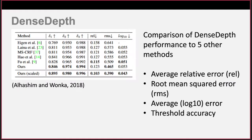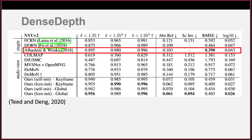DenseDepth is compared against other solutions that produce depth maps. A loss function has been defined by comparing the generated map against a ground truth, in particular comparing the depth values and the depth gradient. We see the average error is comparable or lower than other comparable solutions, showing DenseDepth has a comparable or lower average error.